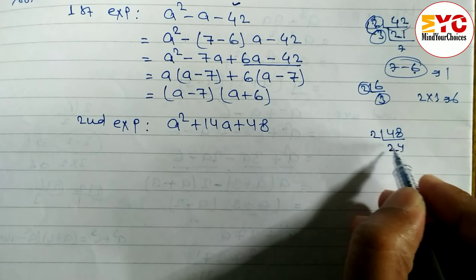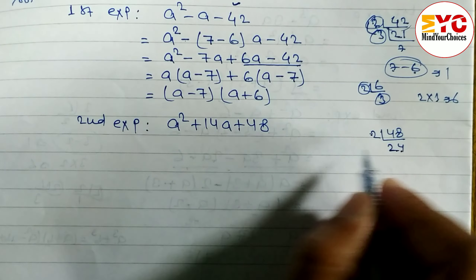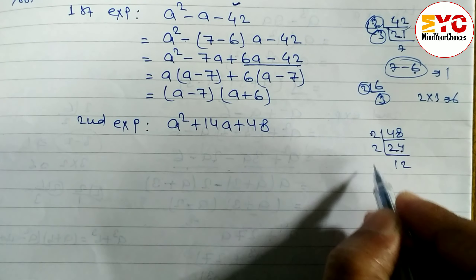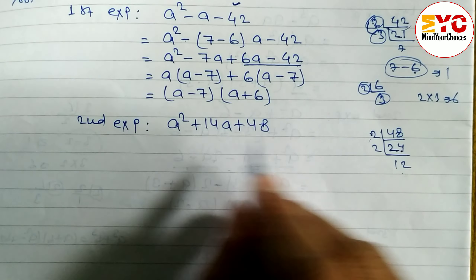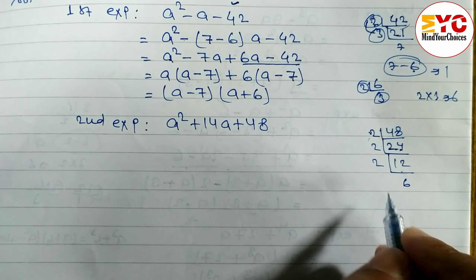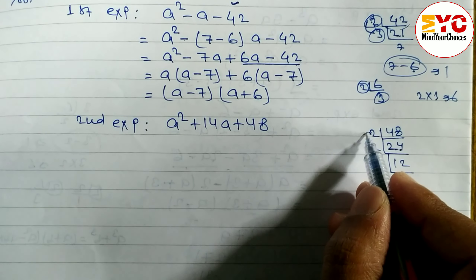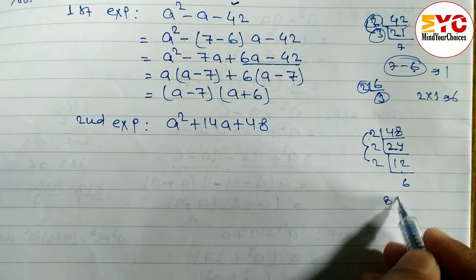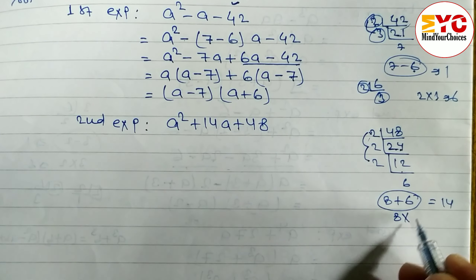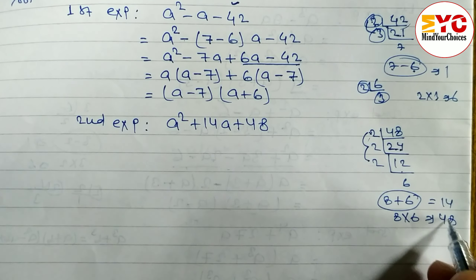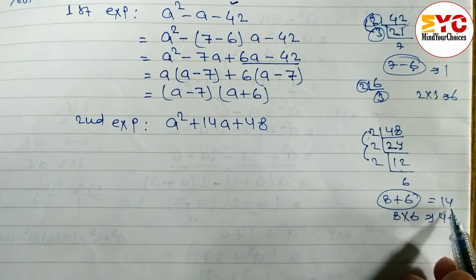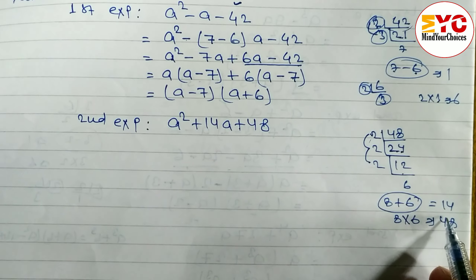Trying pairs: 24 plus 2 gives 26, not 14. Then 12 plus 4 gives 16, still not 14. Next: 8 plus 6 equals 14, and 8 times 6 equals 48. So the factors are 8 and 6.